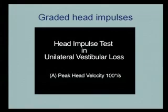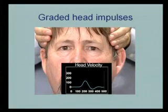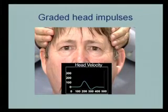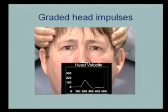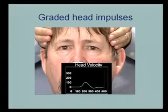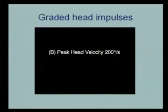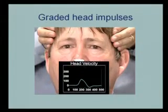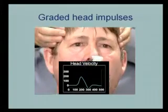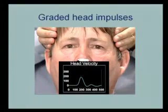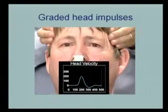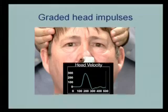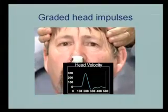Head impulses can be graded with increasing velocity. These are 100 degrees per second — these are slow head movements, but you can still see that when the person's head is turned to the left, you can still see the corrective saccades. This is going at 200 degrees per second, and again going to the left, the corrective saccades are easily seen. This is about as fast as is comfortable. The corrective saccade is very easy to see with a 300 degree per second head impulse.